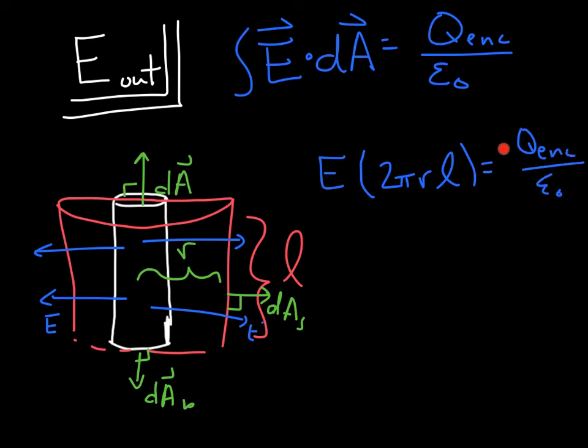So you've got E times area. In this case, this is the side of a cylinder. So that's 2 pi r L equals q enclosed over epsilon naught. Now here again, we don't know how much charge is enclosed. So we've got to express this in terms of density, which we do know. So you get E times 2 pi r L equals, we had a linear charge density. So that's lambda, which is coulombs per meter. You want coulombs, so multiply that by length.